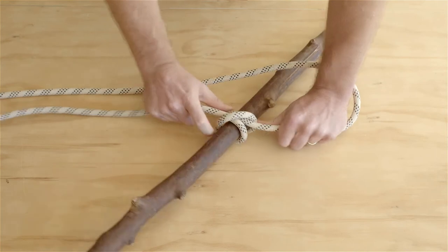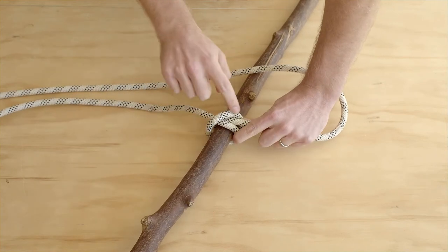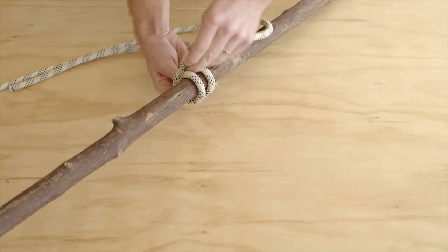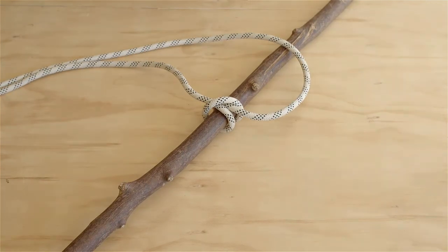You can tell that you've tied the clove hitch correctly because it runs across like that and the ropes are parallel underneath. That is the clove hitch.